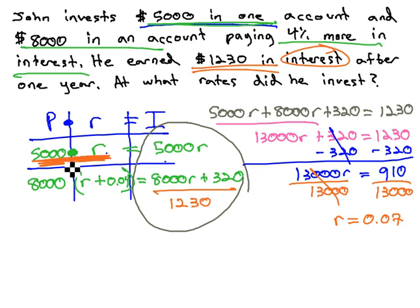That is the R that goes with the $5,000. He has invested $5,000 at 7%, changing the rate to a percentage.